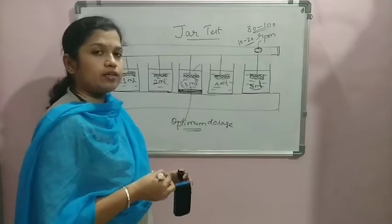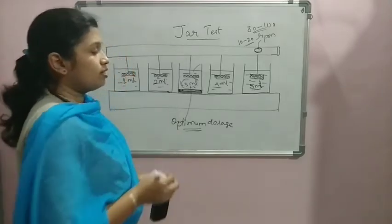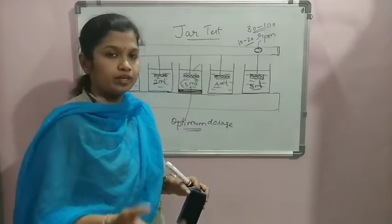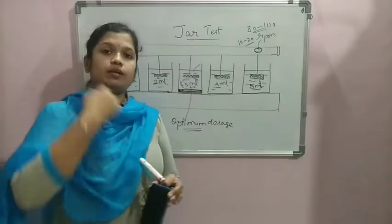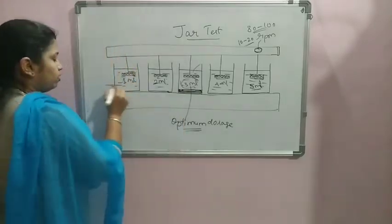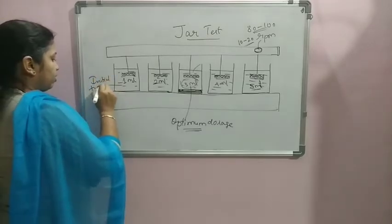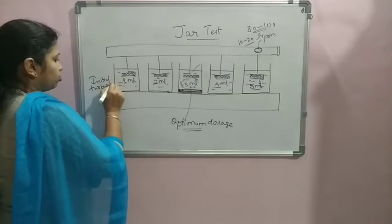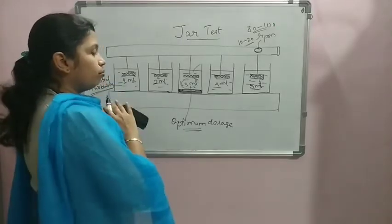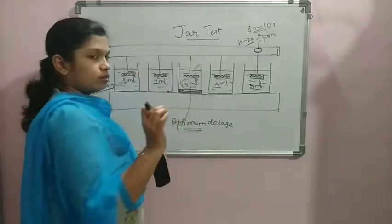Optimum means it should be in an economical range as well as it should do our intended work. In modern setups, we generally don't go for visual findings. What we generally do is use the nephelometric turbidity meter, in which the initial turbidity of this water will be found by making use of the digital instrument.